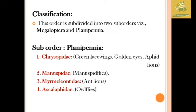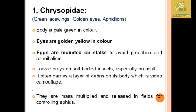While seeing about the classification, Neuroptera are mainly subdivided into two suborders: Megaloptera and Planipenia. The suborder Planipenia is composed of four families: Chrysopidae, Mantispidae, Myrmeleontidae, and Ascalaphidae. The first family is Chrysopidae, which comprises green lacewings, golden eyes, and aphid lions.